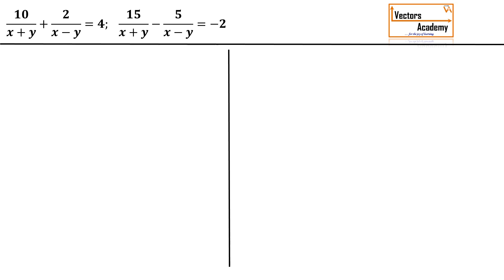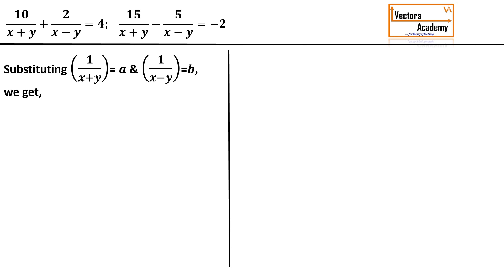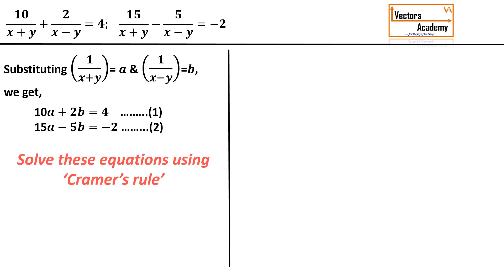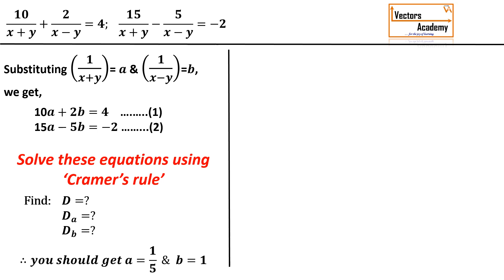Now we'll take another question, which can come for up to 4 marks. It is 10/(x plus y) plus 2/(x minus y) equal to 4, and the second equation 15/(x plus y) minus 5/(x minus y) equal to minus 2. I substitute 1/(x plus y) equal to a and 1/(x minus y) equal to b. The first equation becomes 10a plus 2b equal to 4, and the second becomes 15a minus 5b equal to minus 2. Try solving using Cramer's rule — you should get a equal to 1/5 and b equal to 1.